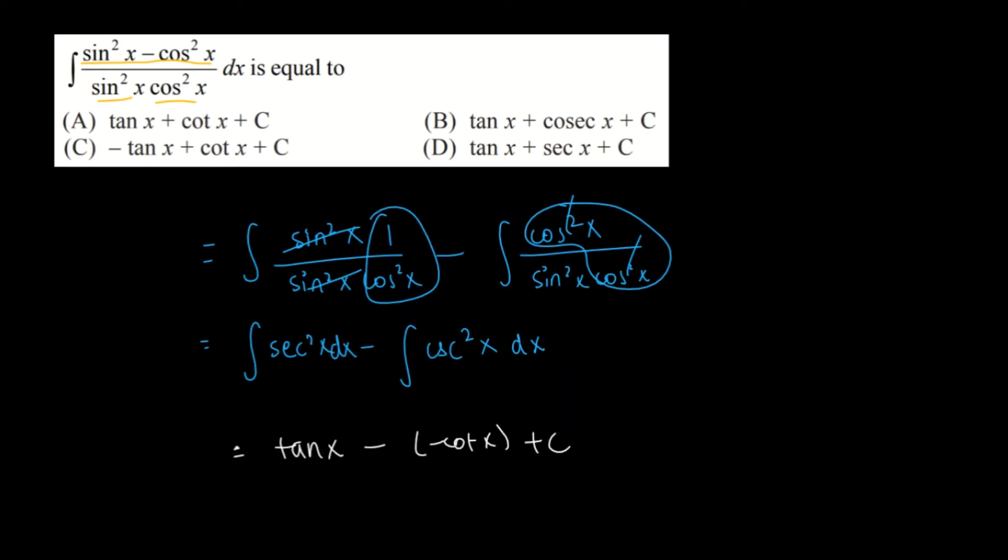So the final answer is tan x plus cot x plus some constant C, which is option number A.